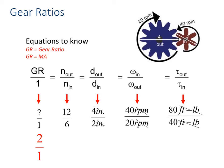So our angular velocity is in over out. The smaller the gear ratio is, the faster the angular velocity is going to be.